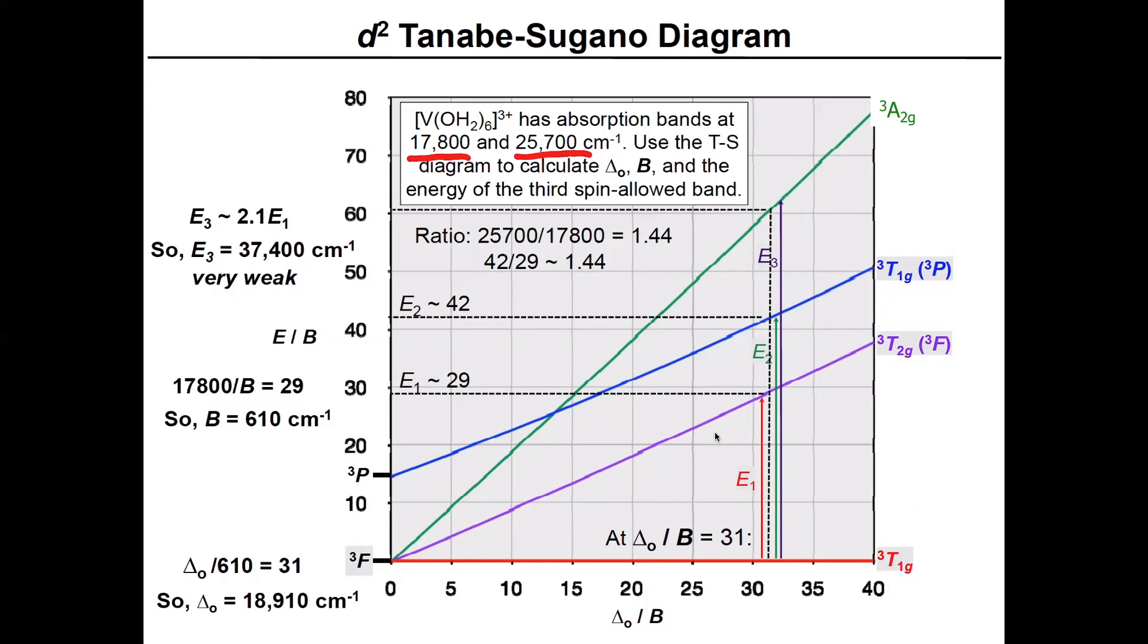And what you'll notice is that the ground state here is shown as the triplet F free ion term going straight across the bottom to the triplet T1g ligand field term. As you're looking at this, you'll notice one other distinguishing feature. If you have similar looking ligand field term symbols, you actually want to specify which free ion term they're derived from.